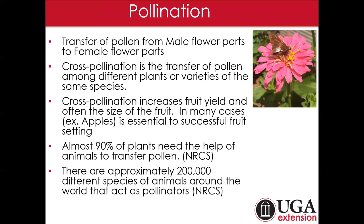Some pollinators are better than others. Bumblebees actually sonicate — they use their wing muscles and buzz those flowers, releasing more pollen. The honeybee doesn't pollinate that way. So if you're a tomato grower and you want bigger tomatoes and better fruit set, the more bumblebees and larger bees you can have, you should see increased yields. Almost 90% of our plants do benefit from or need the help of pollinators.